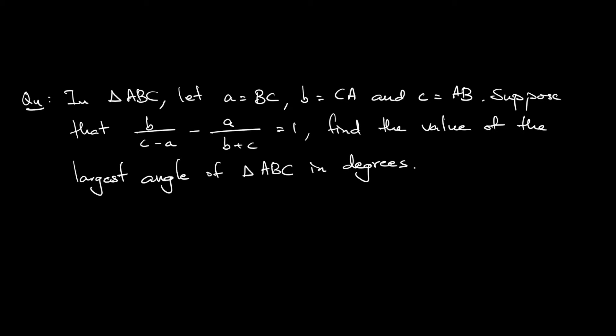With this constraint, the question asks to find the value of the largest angle of triangle ABC in degrees. So three angles, right? Angle A, B and C. Whichever one is the largest, the question asks for that in degrees. We don't even know which one is the largest yet. So let's try.